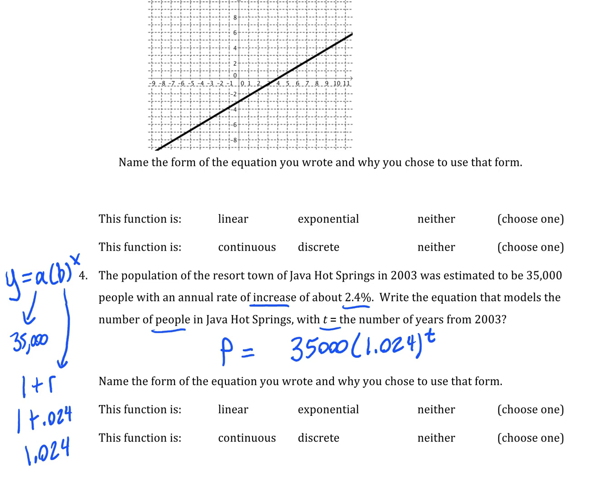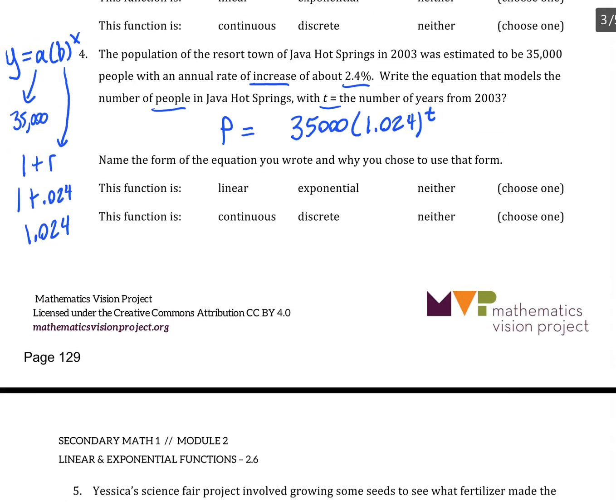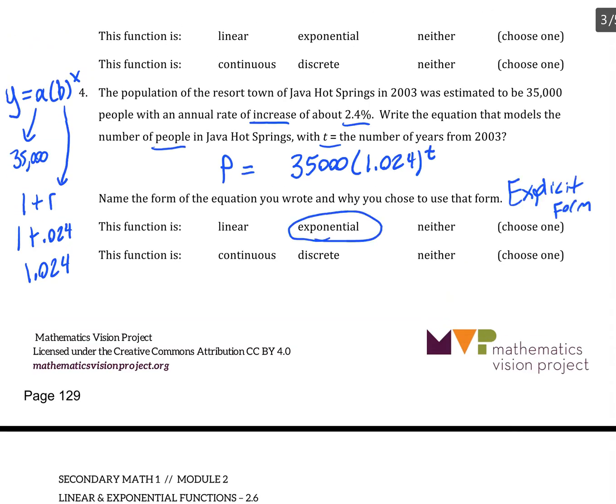I'm not going to do this for every problem, but you will want to think about the answers to these questions. The form of this function is the explicit form of an exponential function, it's exponential, and this is going to be a continuous function because the population is continuously growing. There are people being added to a population daily, every second, through births and moving and stuff like that.